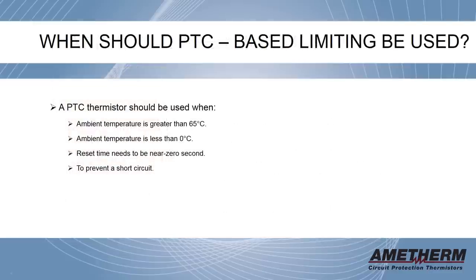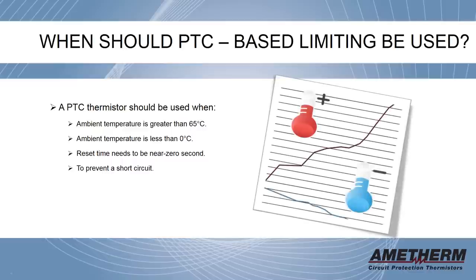When should PTC-based limiting be used? A PTC thermistor should be used when ambient temperature is greater than 65 degrees Celsius, ambient temperature is less than 0 degrees Celsius, reset time needs to be near 0 seconds, or to prevent a short circuit.